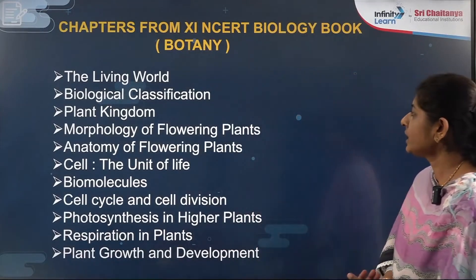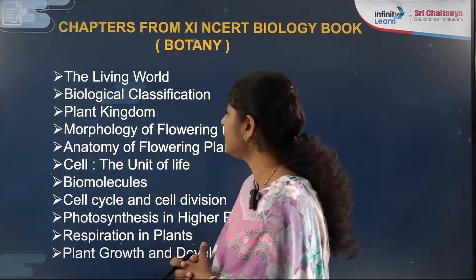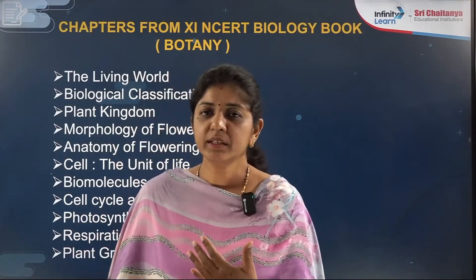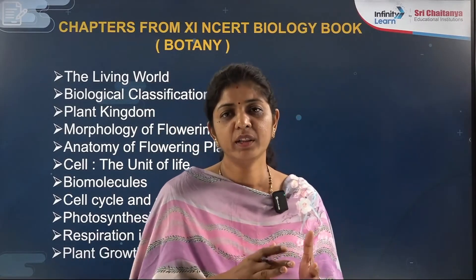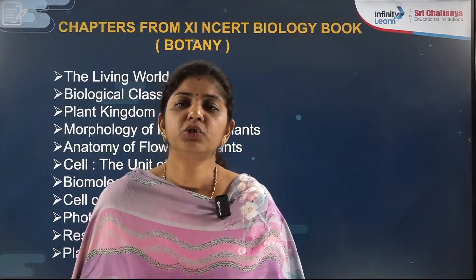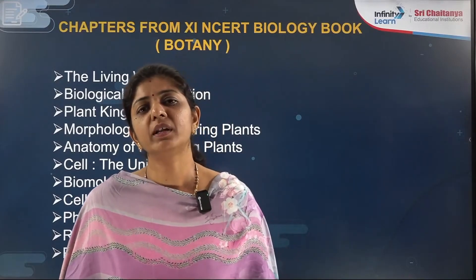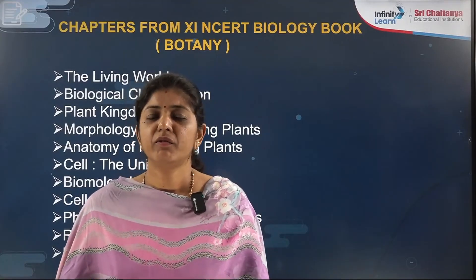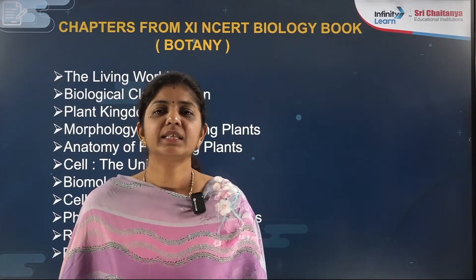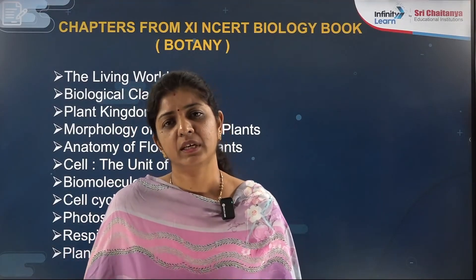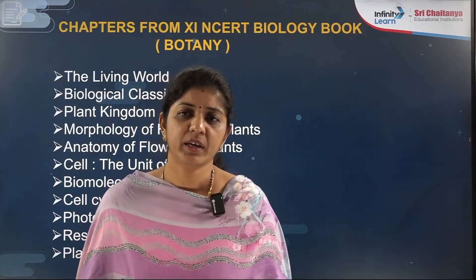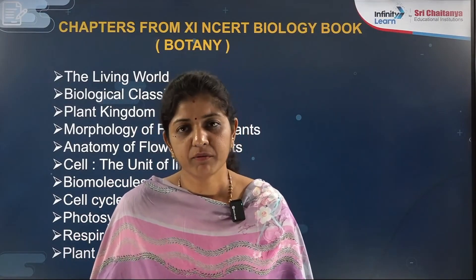In the Plus One NCRT book, the very first chapter is The Living World. Although it is given as the first chapter, its weightage is very less. If you are revising, keep this chapter at last in your priority list — not that you skip it, but prioritize it last. The important topics under The Living World are binomial nomenclature, diversity with the total number of species, and classification examples.